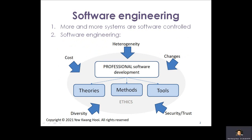Nowadays, more systems — business systems in particular — are software-controlled. Software engineering is about professional software development that involves knowing the theories, methods, and tools within the ethics of the profession to ensure the successful development of software in a heterogeneous environment in the face of changes, constraints of cost, diversity, and the need to ensure security or trust.